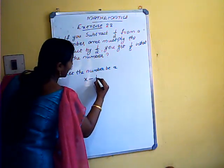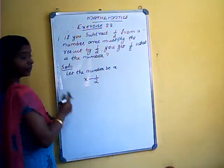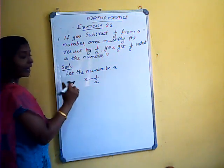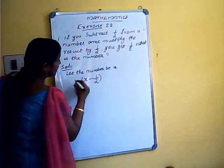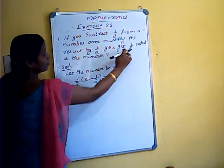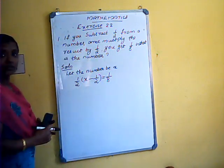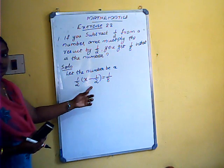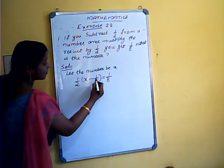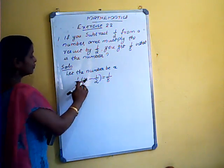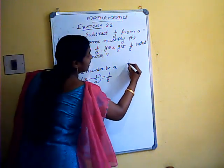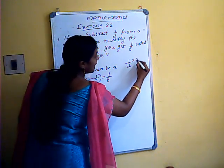You want to subtract 1/2 from x, which gives x minus 1/2. This is then multiplied by 1/2, and the result equals 1/8. So we have the linear equation: 1/2 into (x minus 1/2) equals 1/8.